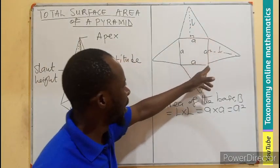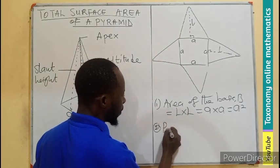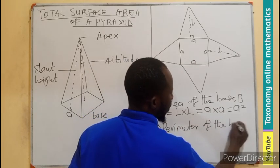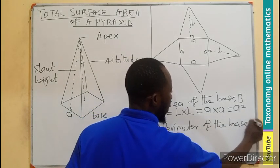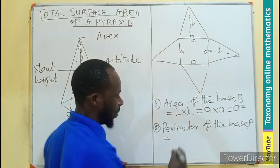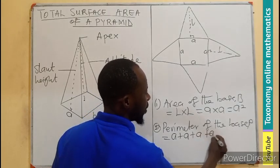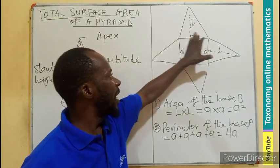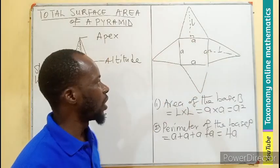We can also find the perimeter of the base. If I label the perimeter P, that is going to be a + a + a + a = 4a. So we know the area of the base is a² and the perimeter of the base is 4a.